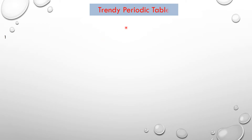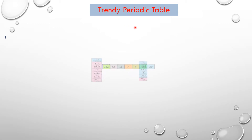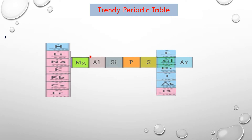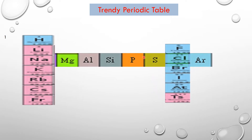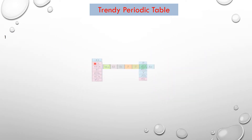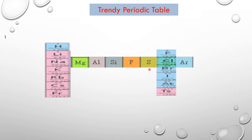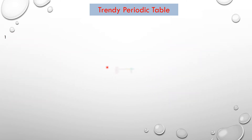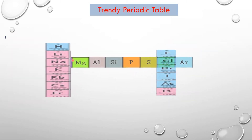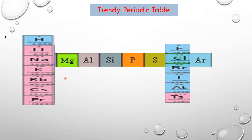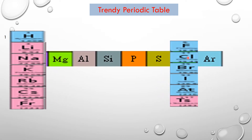Children, if you want to answer all the questions related to trends in the periodic table, first of all, note down this trendy periodic table. This is known as the trendy periodic table. Observe it carefully. I have considered the first group and the seventh group.